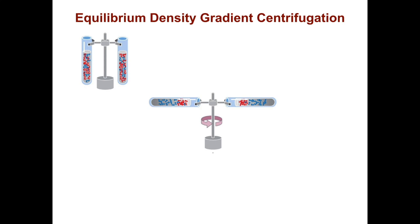They would centrifuge the samples for quite a while, up to two days, and then they would get a band of DNA containing the lighter nitrogen on top and the DNA containing the heavier nitrogen on the bottom.